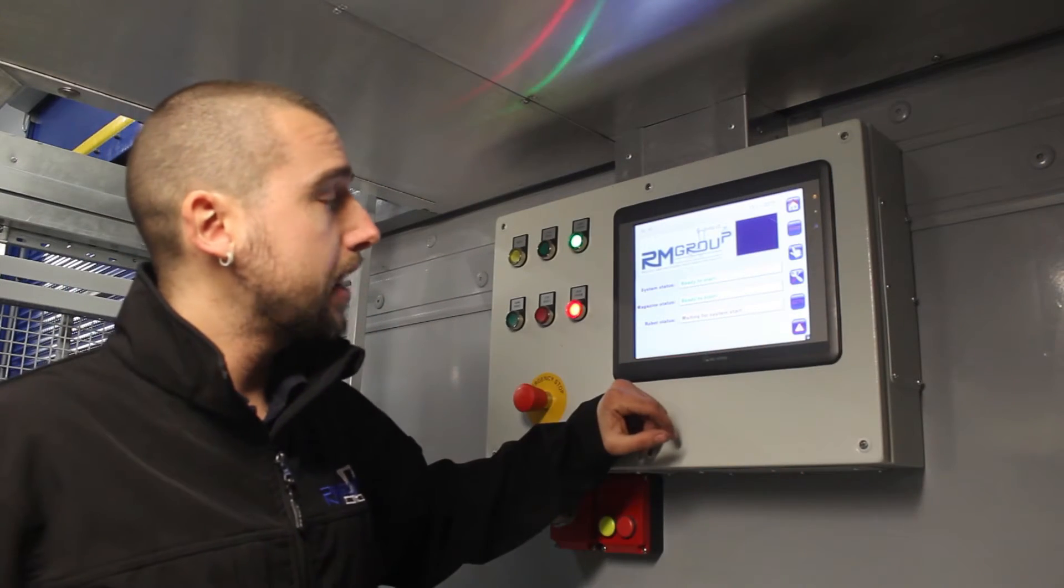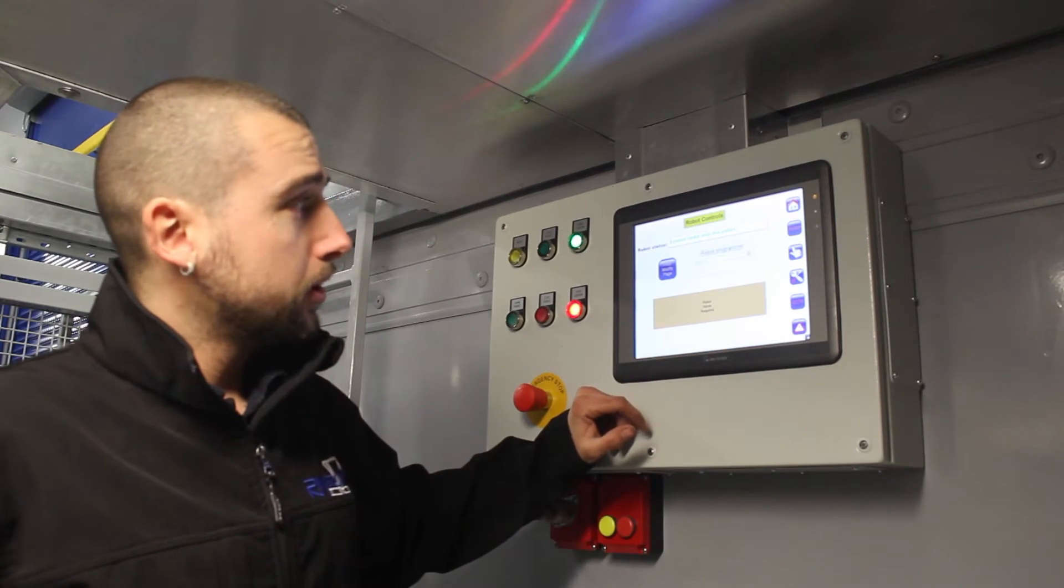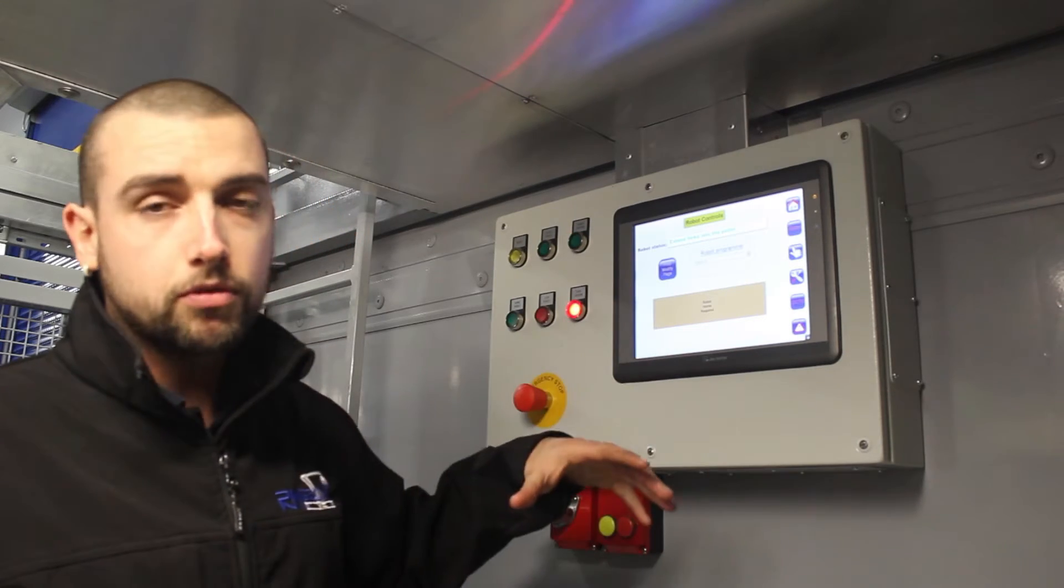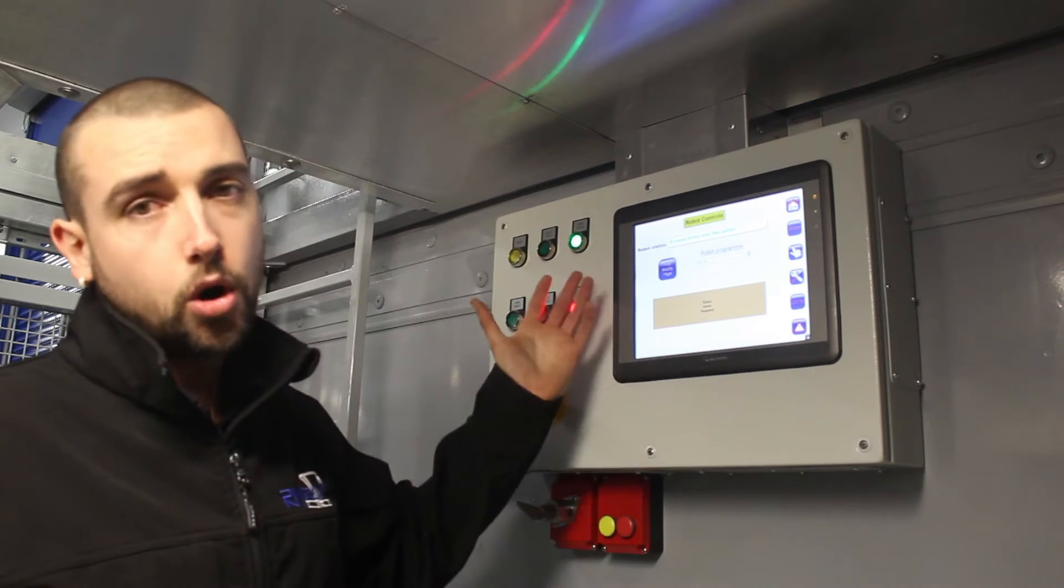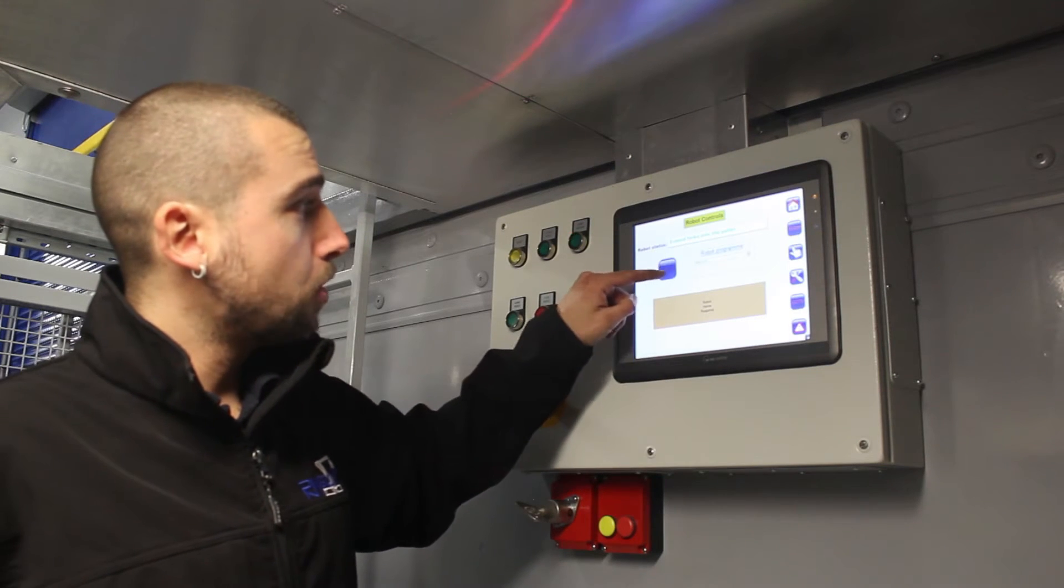First of all you've got the home page of the HMI. What we will do is you go into the robot page. Once you go into that robot page you'll have your robot status, what programme you're running, and start and start with home the robot. But the main one we're going to be talking about is the programme page.